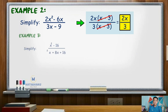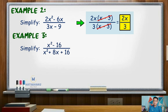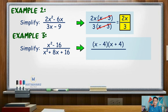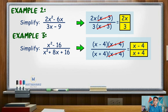Third example: simplify X squared minus 16 all over X squared plus 8X plus 16. In the numerator, X squared minus 16 is a difference of two squares, so its factors are X minus 4 and X plus 4. For the denominator, since it is a perfect square trinomial, its factors are X plus 4 times X plus 4. Canceling the common factor X plus 4 gives the simplified form X minus 4 all over X plus 4.